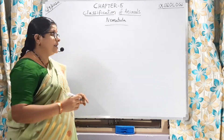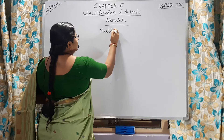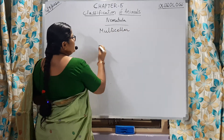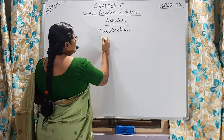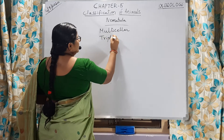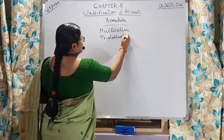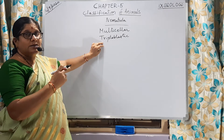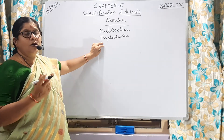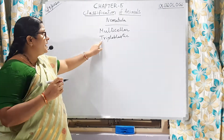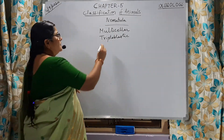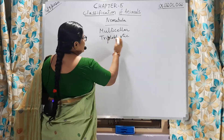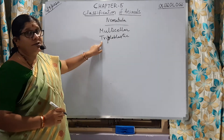And they are triploblastic, multicellular organisms — they are made up of many cells. Triploblastic means three layers of cells will be present. In Coelenterata, two layers of cells are present, so we call them diploblastic. Here, these organisms are triploblastic.